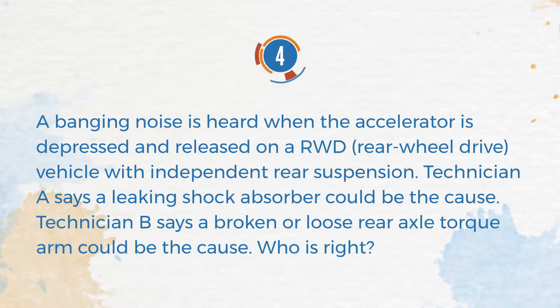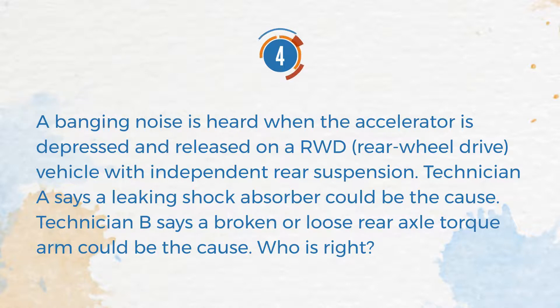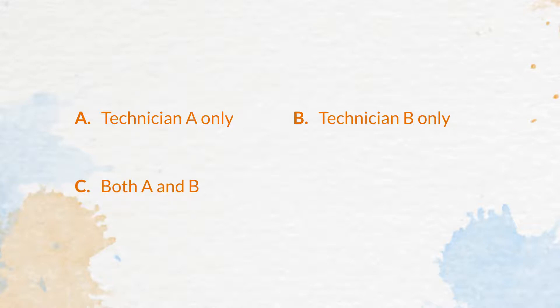Number 4. A banging noise is heard when the accelerator is depressed and released on a RWD vehicle with independent rear suspension. Technician A says a leaking shock absorber could be the cause. Technician B says a broken or loose rear axle torque arm could be the cause. Who is right? A. Technician A only. B. Technician B only. C. Both A and B. D. Neither A nor B.